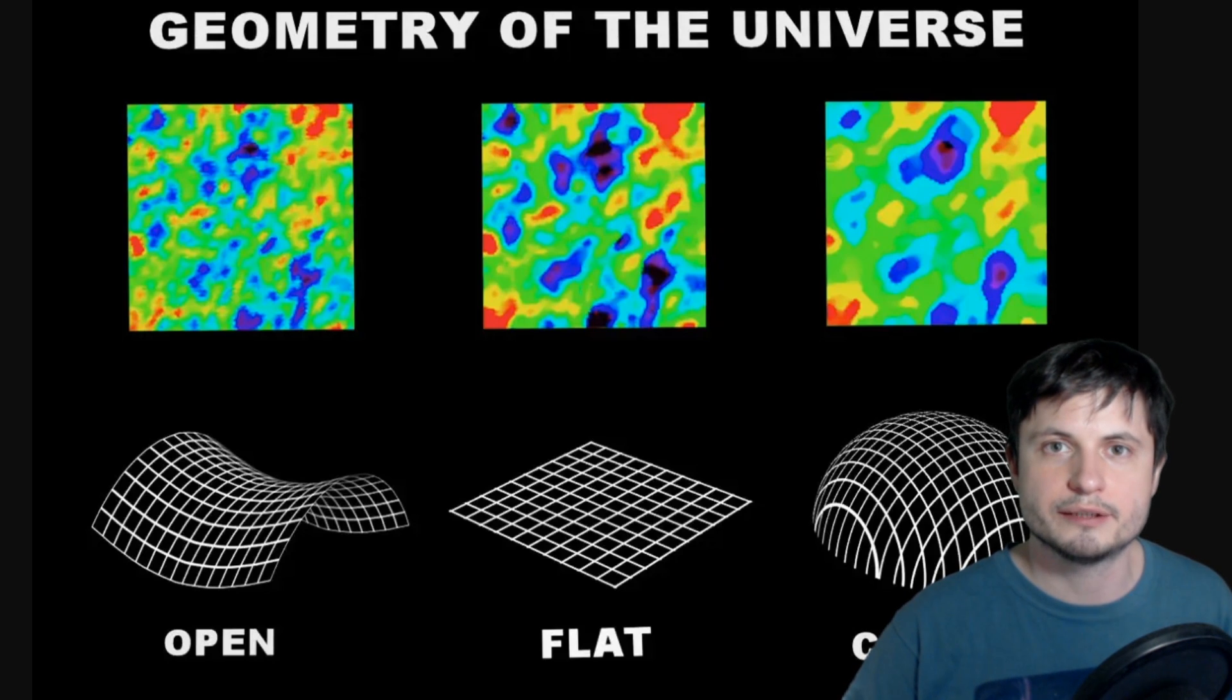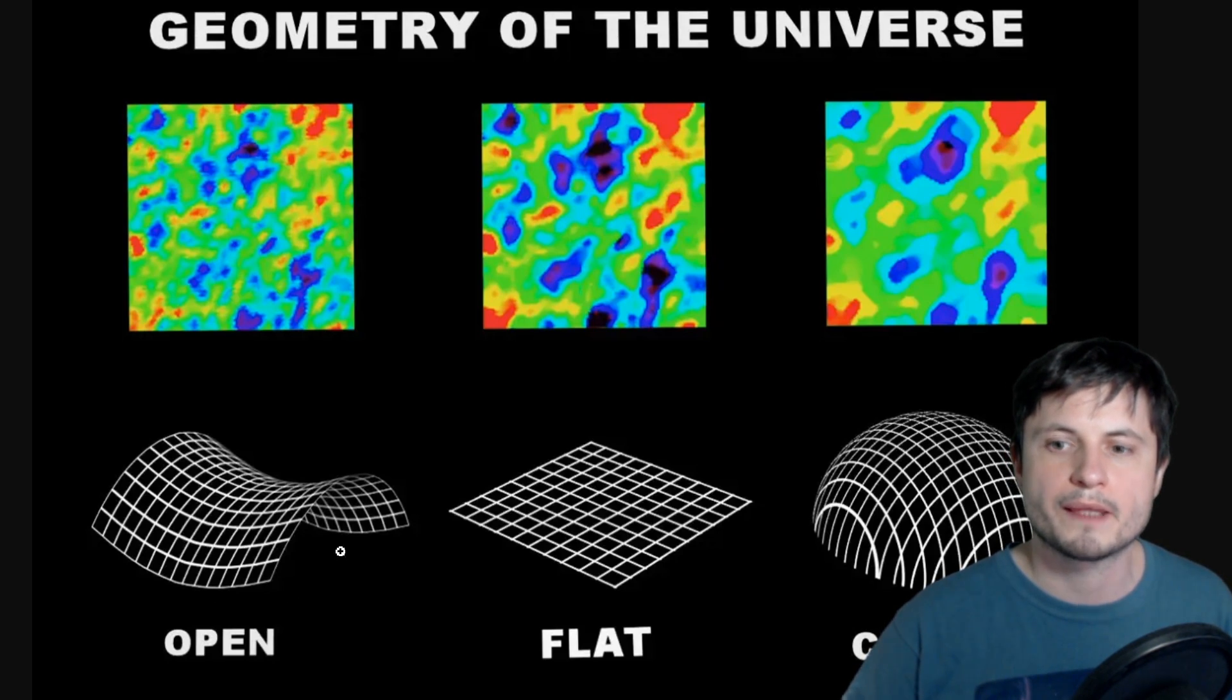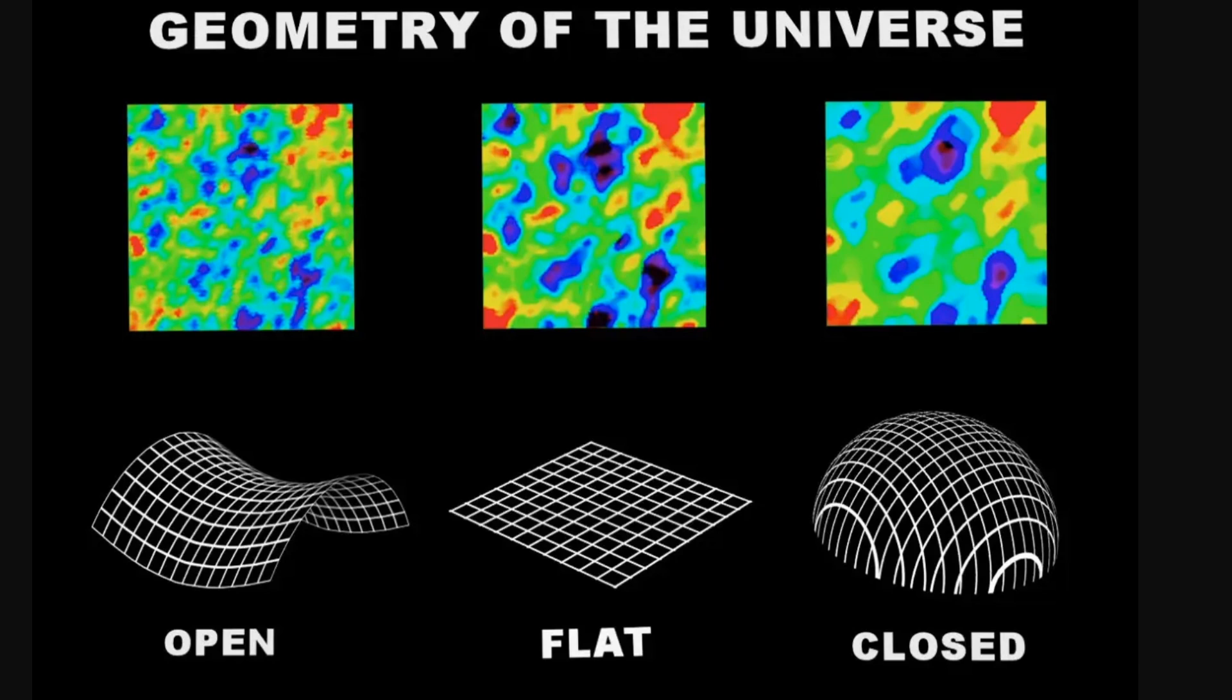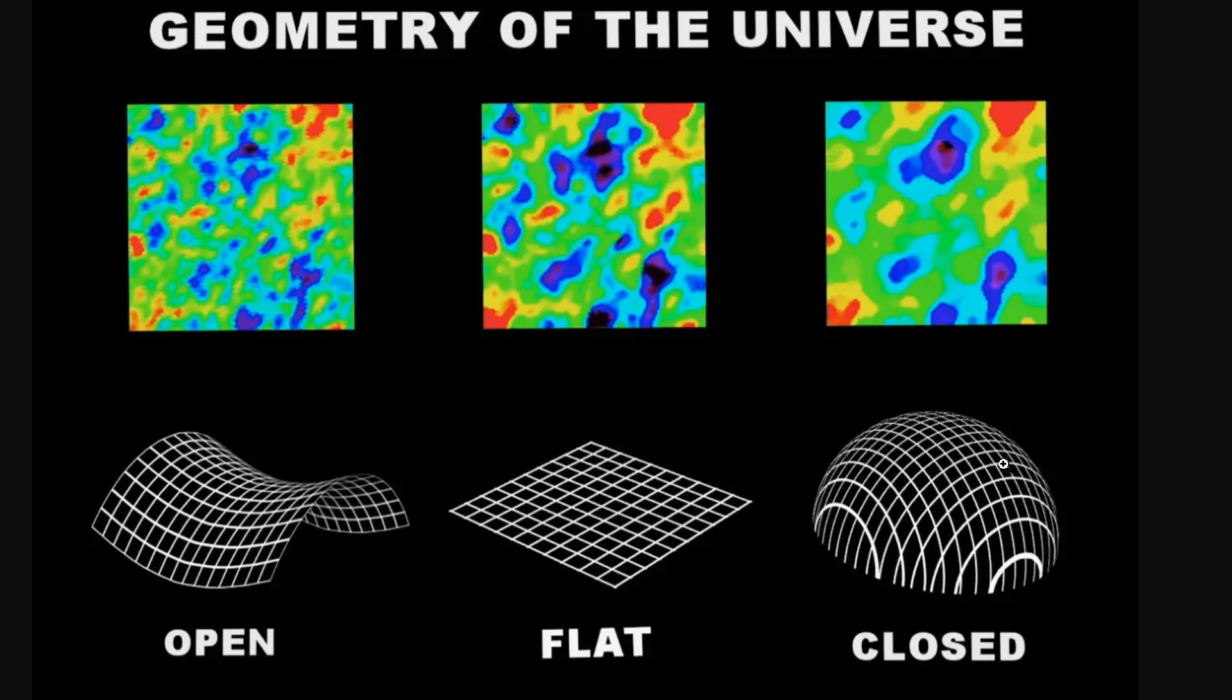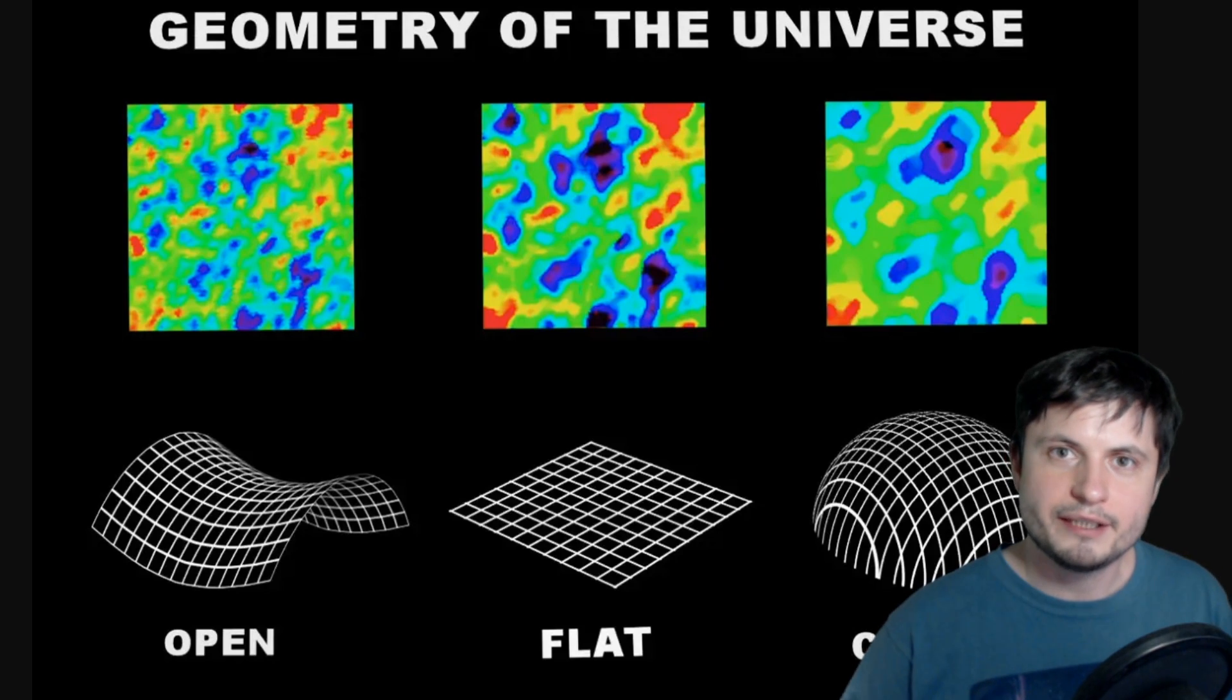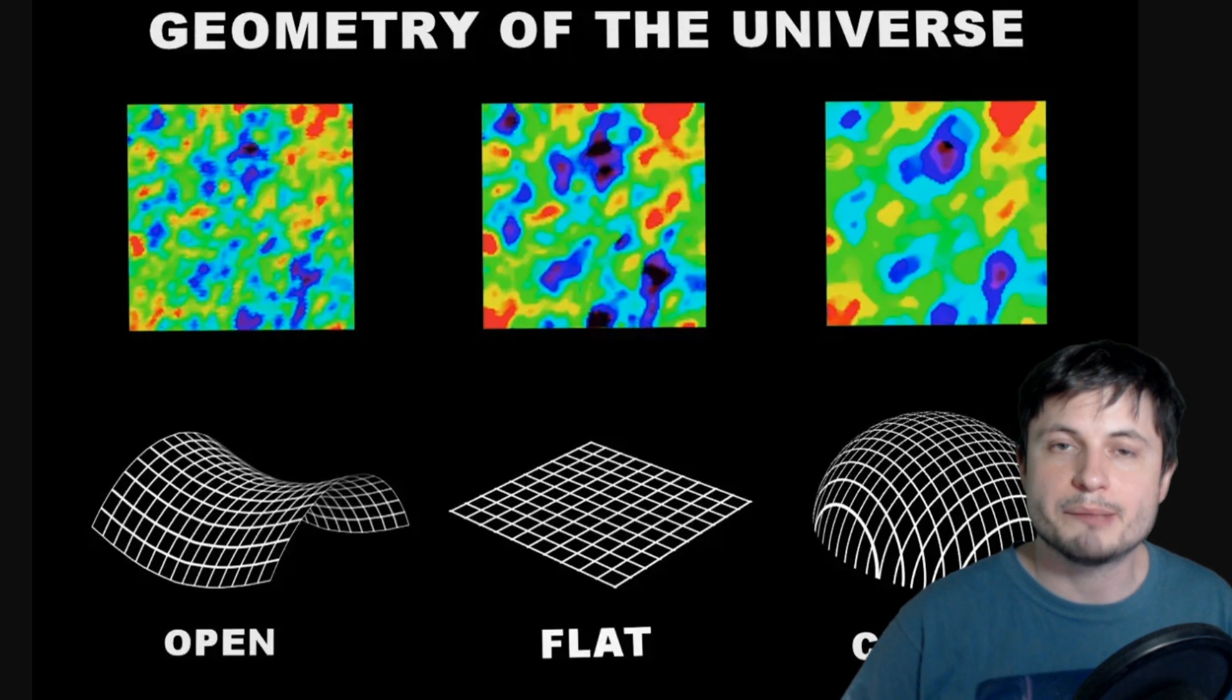However, if the universe is not flat, like for example if it's open, or if it's closed, the shape of these lasers would change with time. They would either converge and cross at some point, possibly billions and billions of light years later, or they would diverge and become I guess a v-shape.